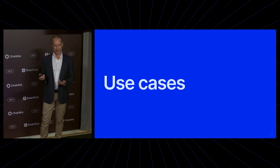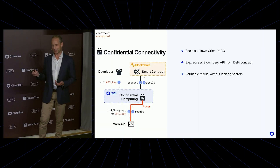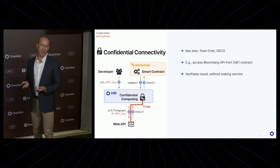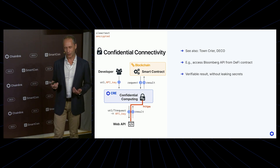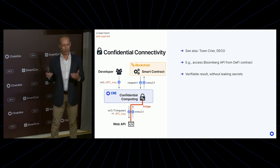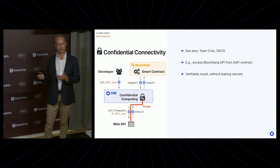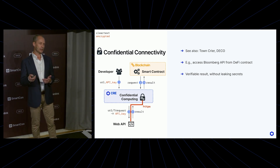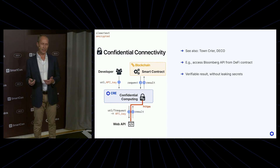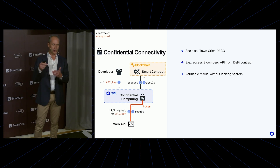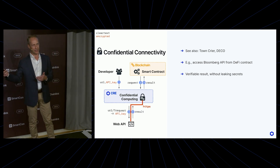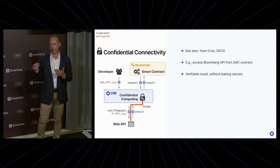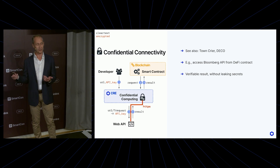Now, what can we do with this technology? Let me go over a couple of use cases. A first use case takes us back to the origins of Chainlink — connecting blockchains to the outside world. Suppose you're a developer and you want to create a DeFi app that calls out to a Bloomberg API. For your Bloomberg API calls, you have an API key, and you cannot just put that API key on a blockchain because that's an expensive subscription.